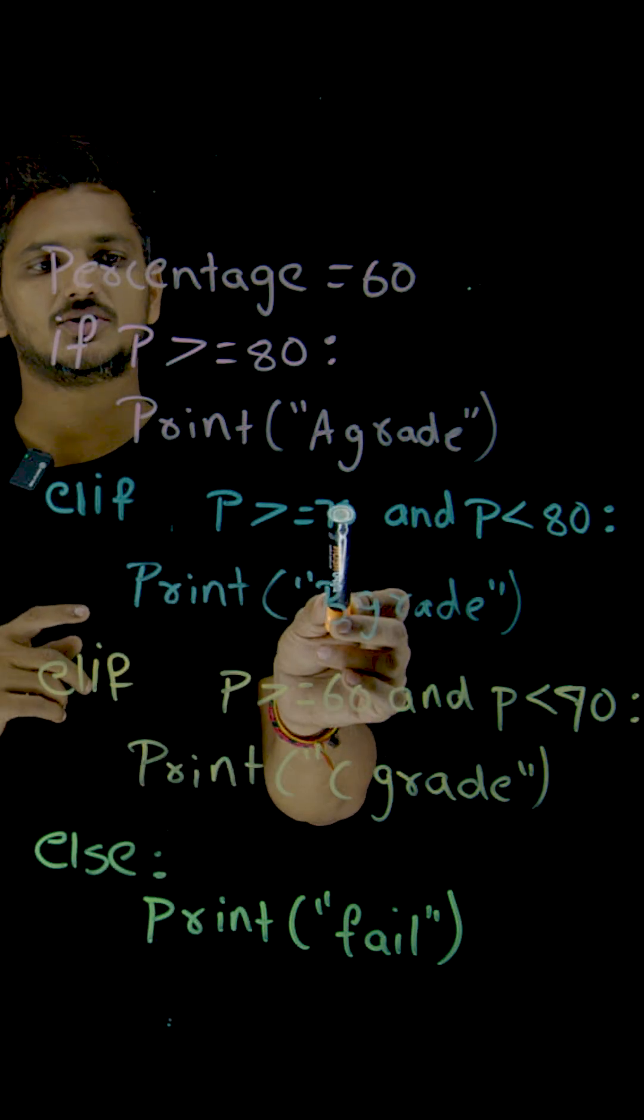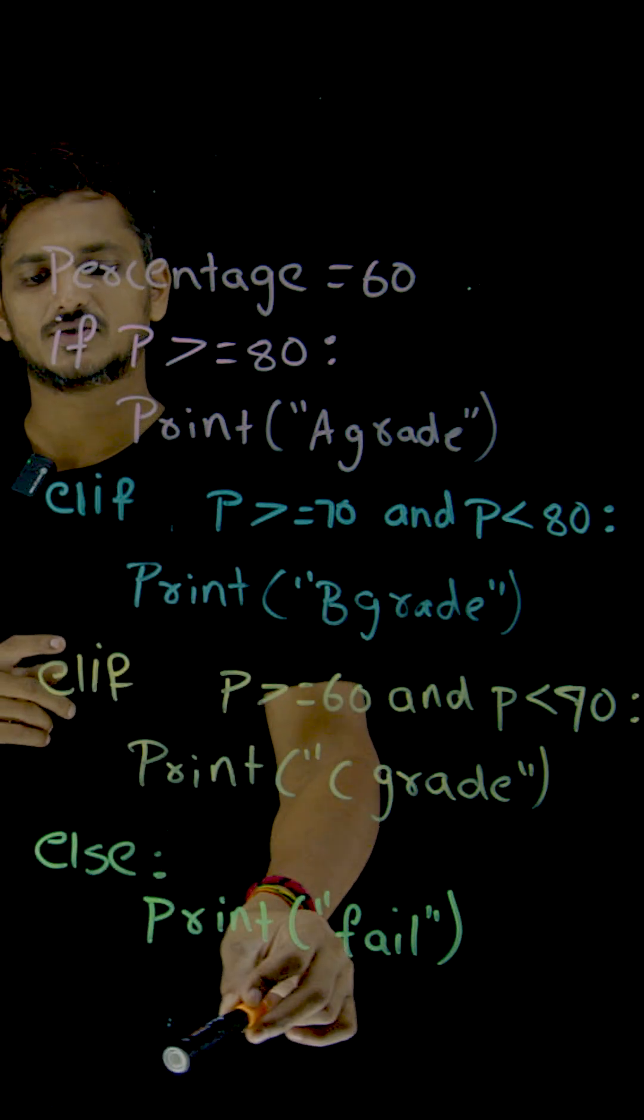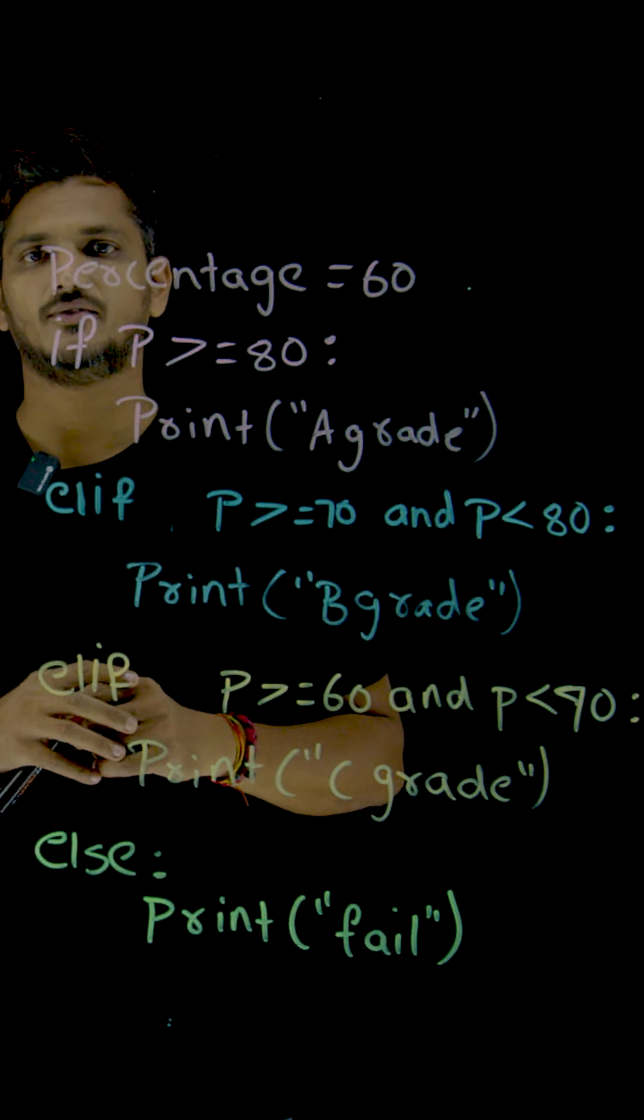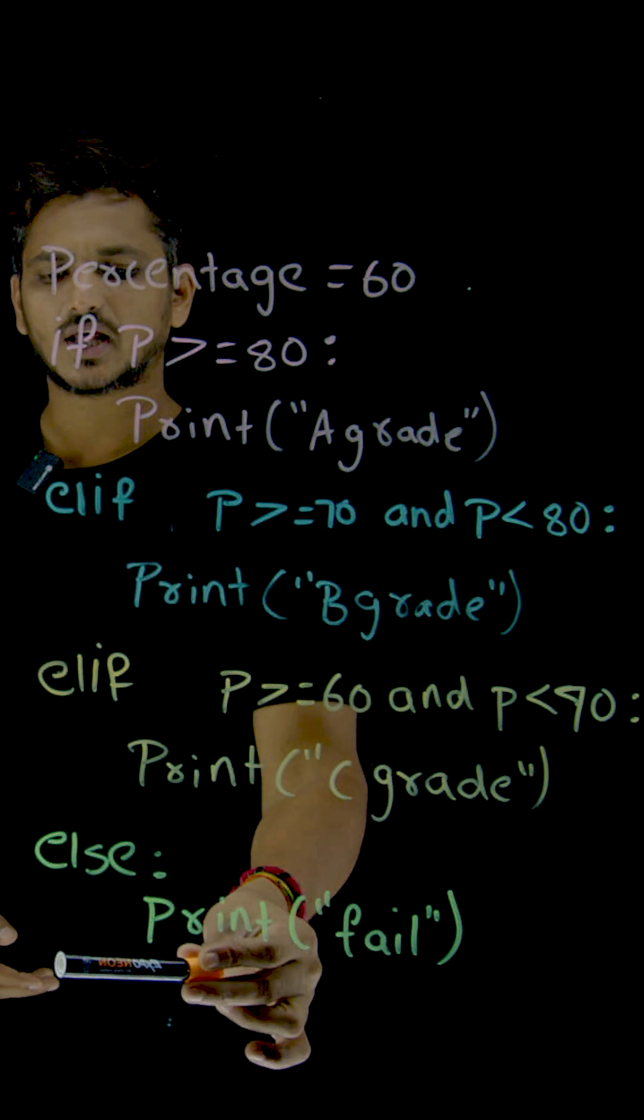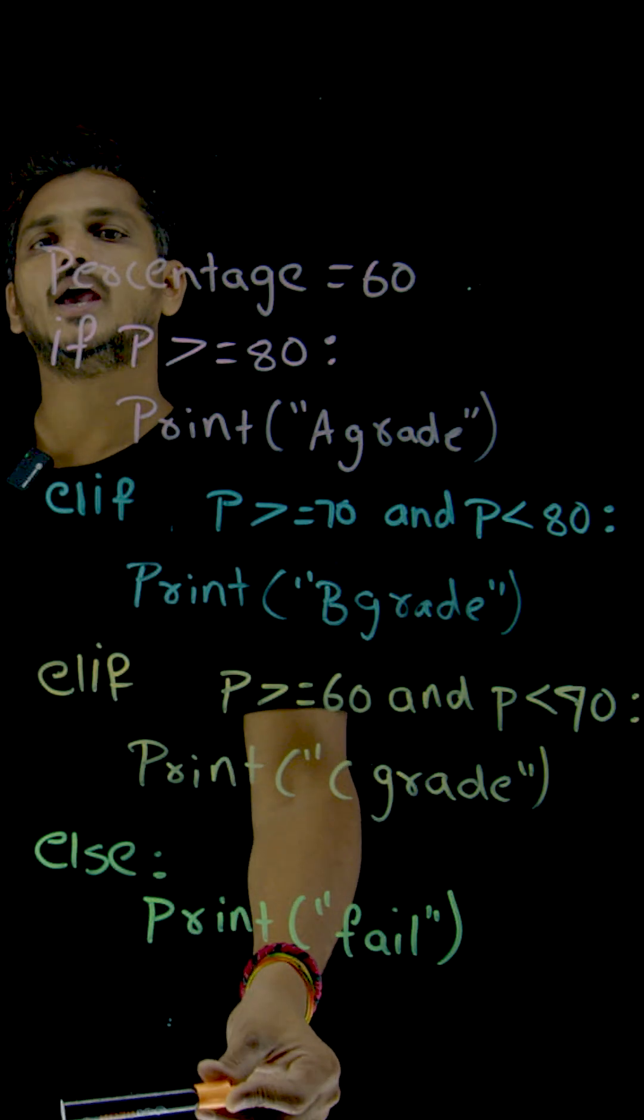Otherwise, wherever the condition is true, execute the code and come out of this if statement. If else if ladder, come out of that and execute the remaining code. If there is some other code below this, execute that.